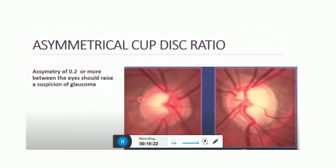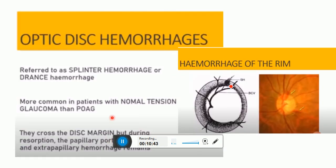Asymmetry of the cup to disc ratio, asymmetry of more than or equal to 0.2 of both eyes in the presence of similar disc sizes, should prompt further evaluation to rule out glaucoma.